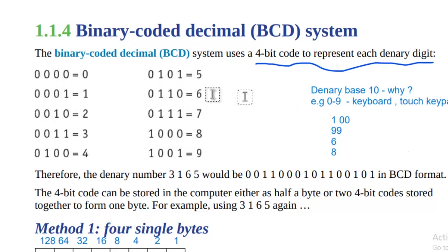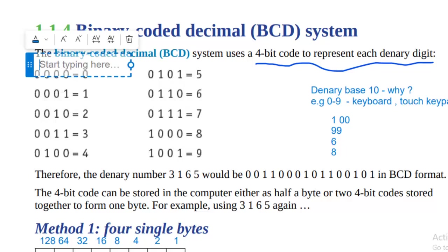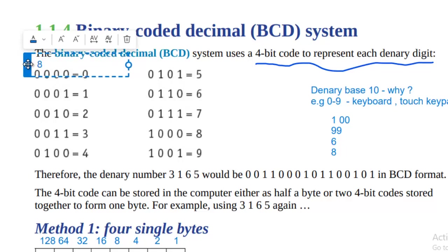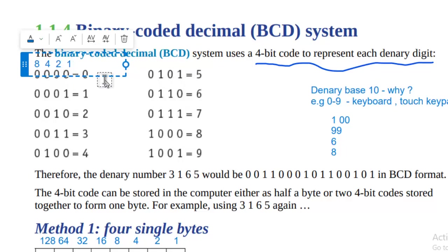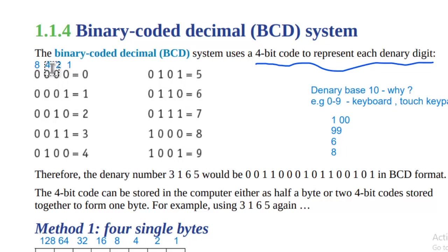In BCD code we are using four bits to represent one denary digit. So we use four binary digits to represent zero, four binary digits to represent one, and so on. We assign weights of 8, 4, 2, and 1. To make zero: zero multiplied by 1, zero multiplied by 2, zero multiplied by 4, zero multiplied by 8 — all give zero, so the total is zero.